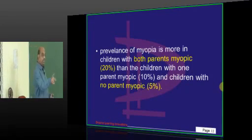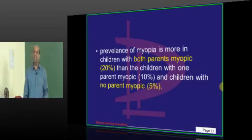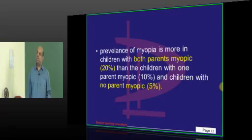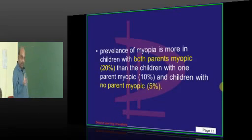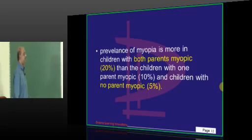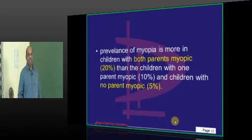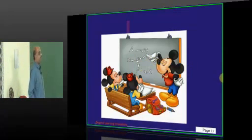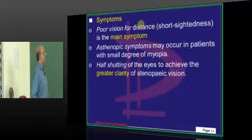If both parents are myopic, the chance of the child having myopia is 20%. If one parent is myopic, the chance is 10%. If no parents wear spectacles, the chance of the child getting myopia is 5%. So school-going myopia, simple myopia, is what needs to be remembered.